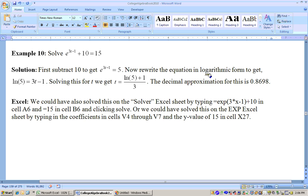Get e to the 3t minus 1 equals 5. And now we could write the equation in logarithmic form to say the 3t minus 1, the exponent, equals, since the base is E, the natural log.